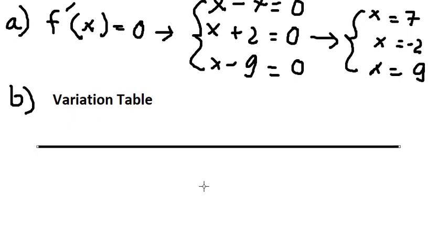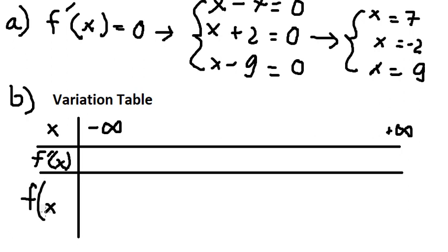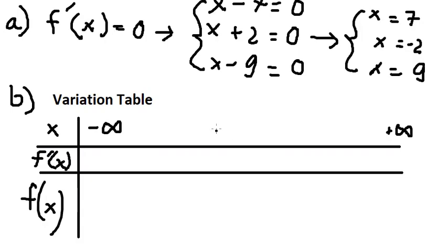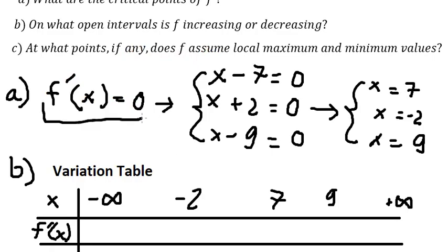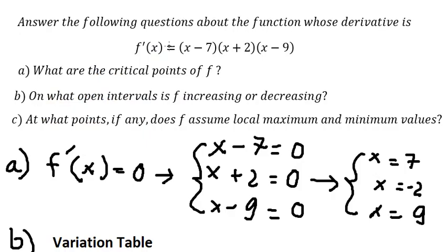So the variation table should look like this. We place the critical values in order: negative two, then seven, then nine. We put zero under each critical value in the table, since these are the critical points where the derivative equals zero.